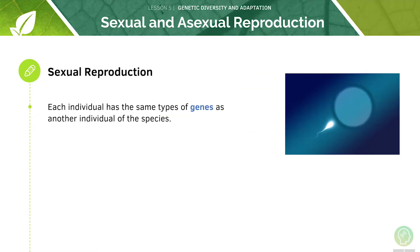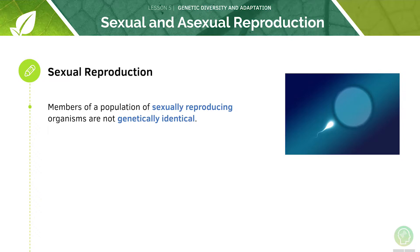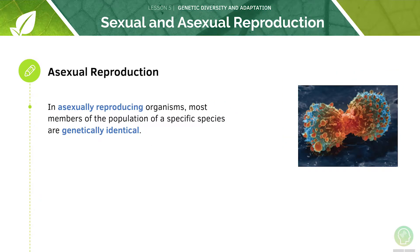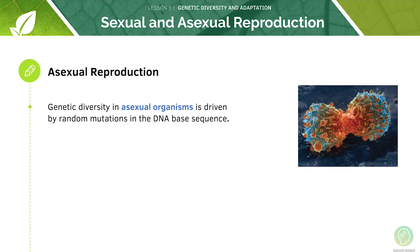Each individual has the same type of genes as another individual of the species. However, members of a population of sexually reproducing organisms are not genetically identical — they have different alleles of each gene, making them genetically non-identical. In asexually reproducing organisms, most members of a particular population of a specific species can be genetically identical, since no meiosis occurs. Genetic diversity in asexual organisms is driven by random mutations in the DNA base sequence.